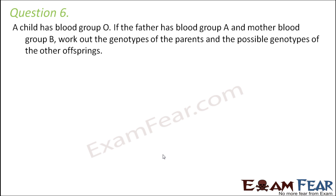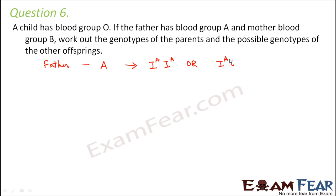Question number 6. A child has blood group O. If the father has blood group A and the mother's blood group is B, work out the genotypes of the parents and the possible genotypes of other offspring. The father's blood group is A, so his genotype can be either I^A I^A or I^A i. The mother's blood group is B, so her genotype can be either I^B I^B or I^B i.